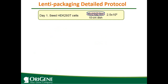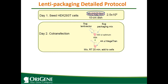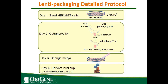Here are the lentiviral packaging step-by-step protocols. Day 1: seed HEK293 cells. For a 10 cm dish, seed about 2.5 million cells. Day 2: do a co-transfection. In an Eppendorf tube, add 500 µL Opti-MEM media, then add 5 µg lentiviral vector and 6 µg packaging mix, and mix together. Then add 44 µL Mectran transfection reagent, mix and incubate at room temperature for 20 minutes, then add to your cells. The next day, change the cell culture media. Day 4, the virus is ready to be harvested.